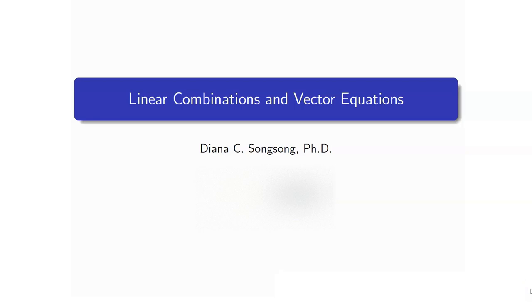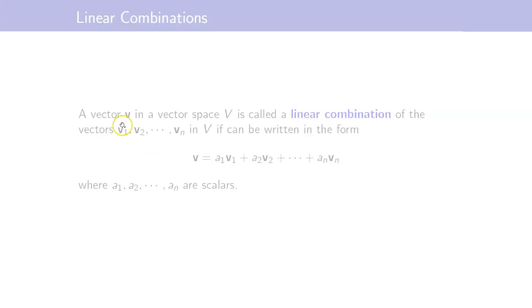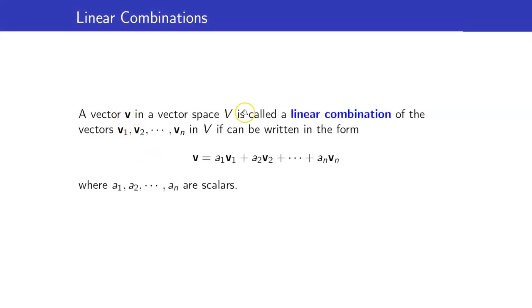In this section, I am going to talk about linear combinations and vector equations. Suppose that we have a vector in a vector space V, we say that it is a linear combination of n other vectors if we can write it in this form.